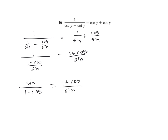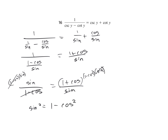Do these equal each other? Multiply both sides by the common denominator: 1 minus cosine and sine. Sine reduces, 1 minus cosine reduces, and we're left with sine squared equals 1 minus cosine squared, which is the difference of squares — and that is sine squared. Verified.